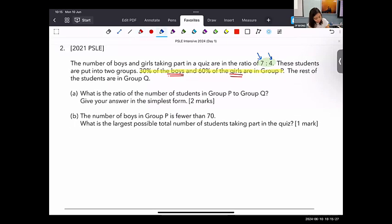Now, this is important because this 30% of the boys is talking about the boys taking part in the quiz. So 30% of the boys, 60% of the girls. The girls will be four units, the boys we know is seven units. So what can we do here? Later on I'll tell you what you can do. So students are in group Q.